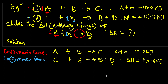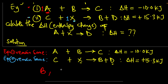Now it's time to cancel. For anything to cancel out, it must not be part of the overall equation. The overall equation has A, X, and D. Looking at the two equations, B is present but not in the overall equation, and C is also present but not in the overall equation. So both B and C must be cancelled out.